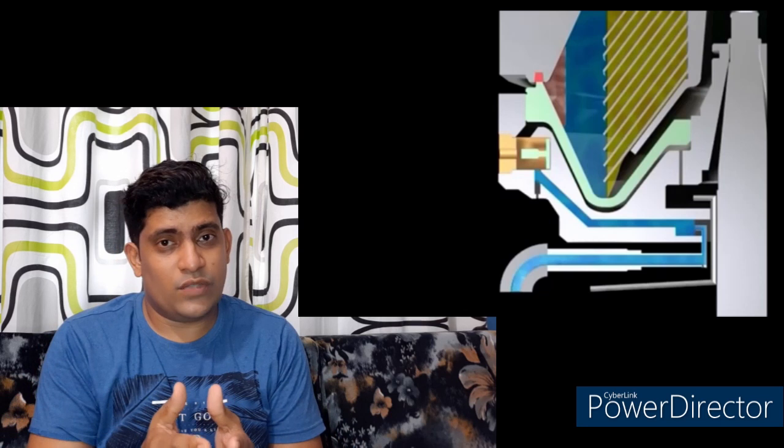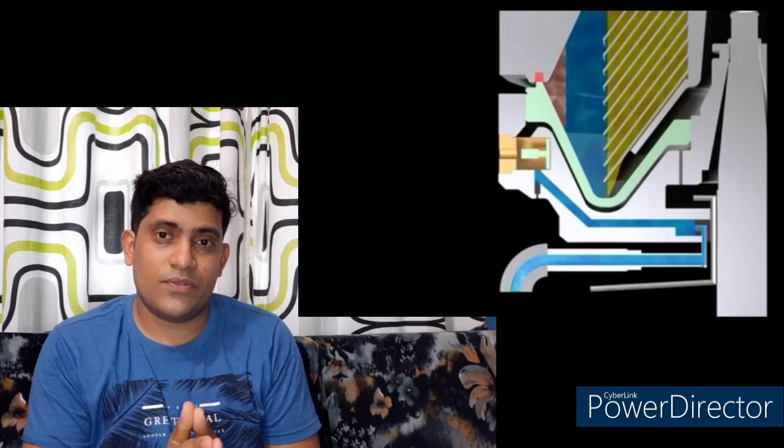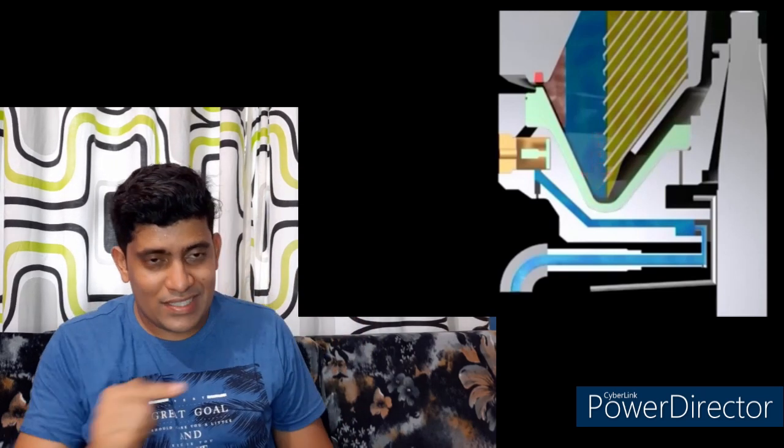Now desludging water or ball opening water is given for one or two seconds. Then the same line, then the same line where the desludging water is supplied, you have another line coming down. And there you have one orifice.